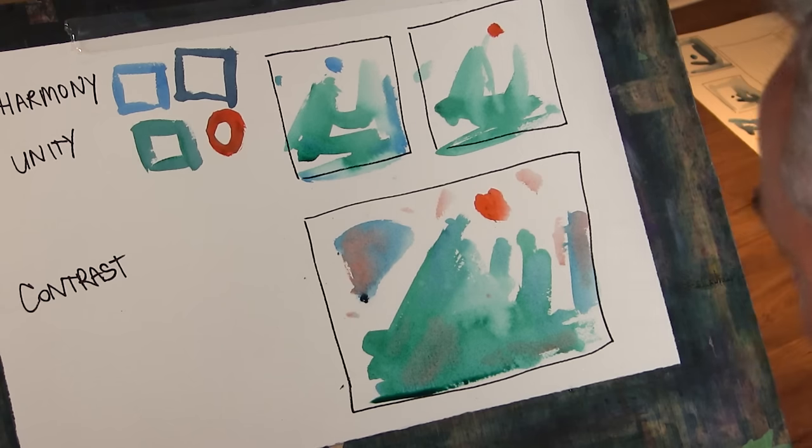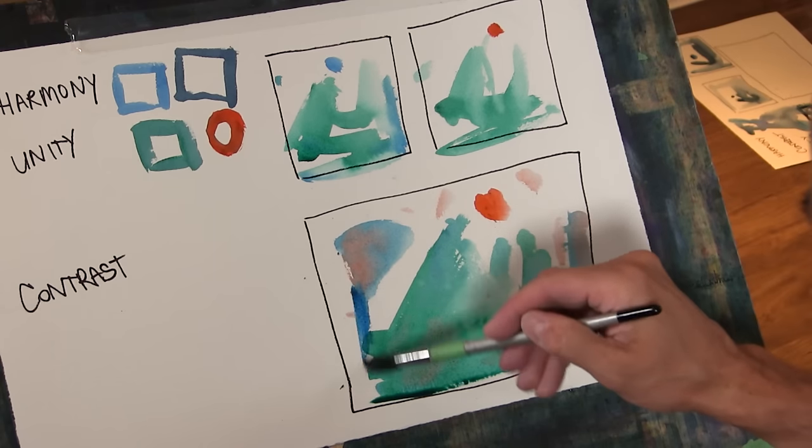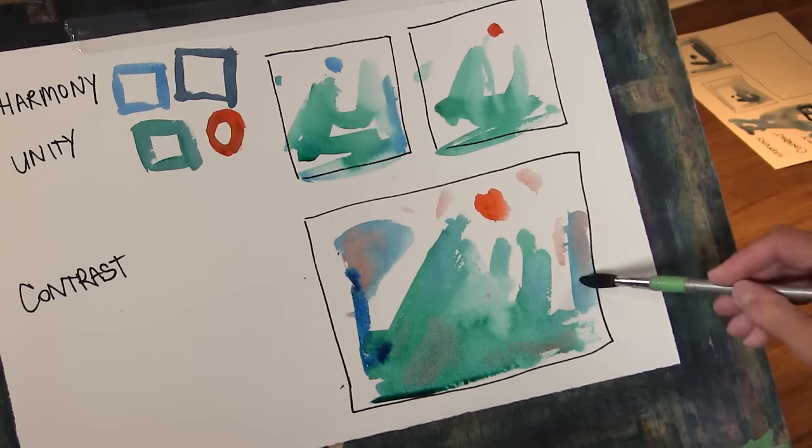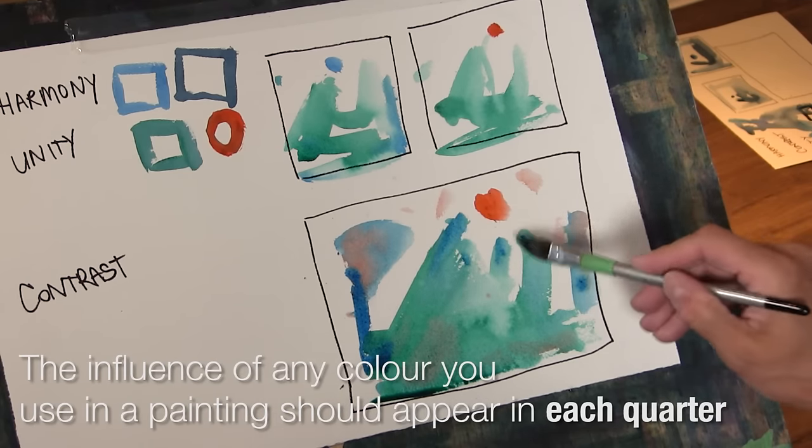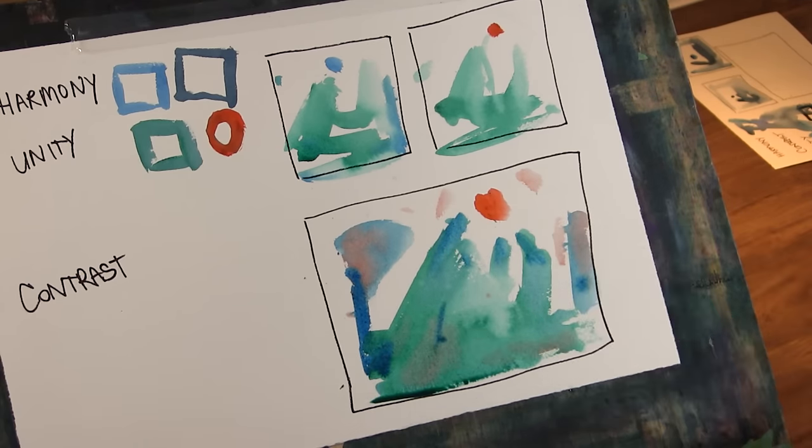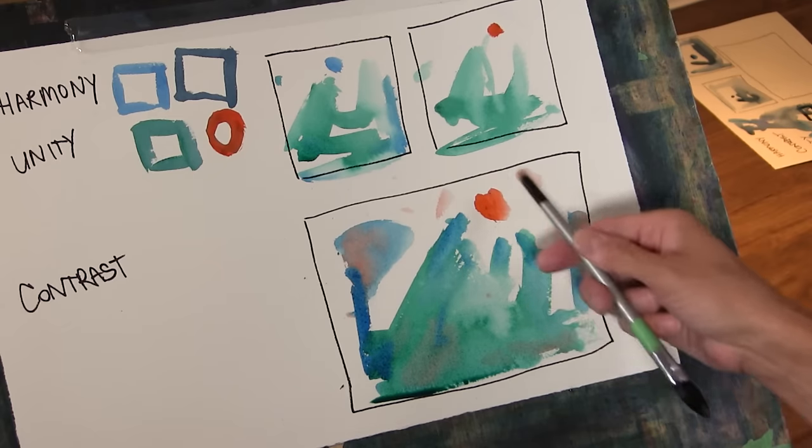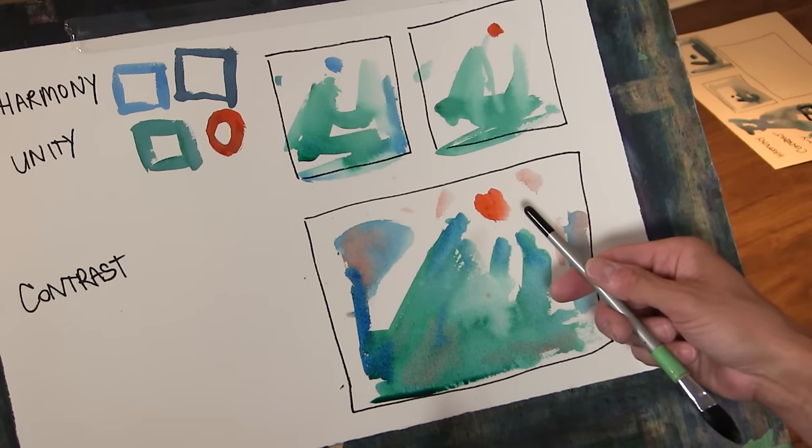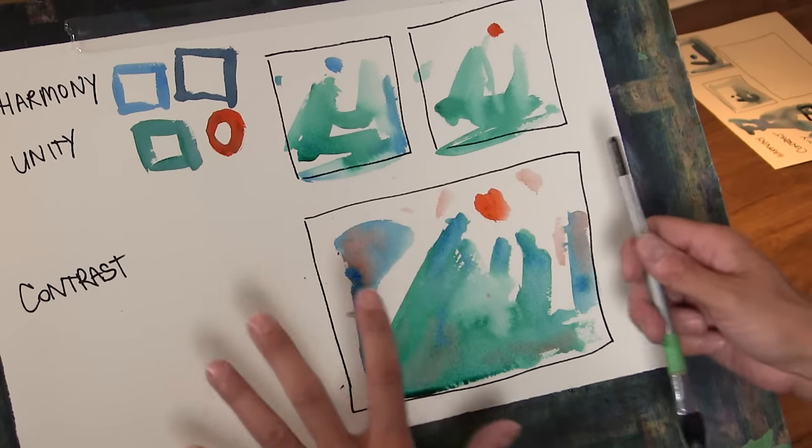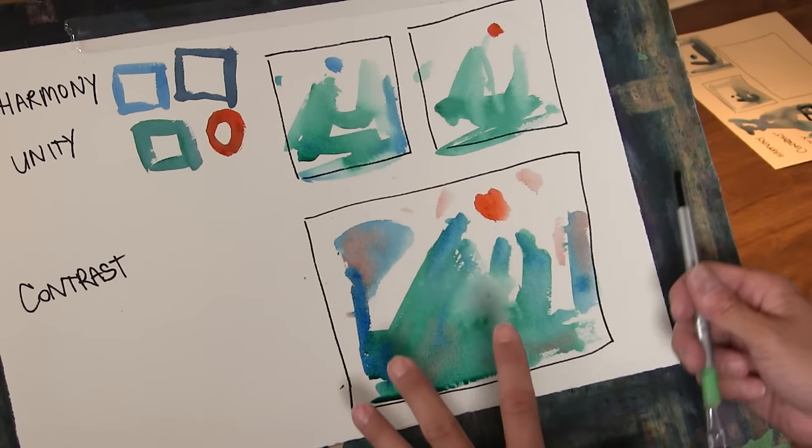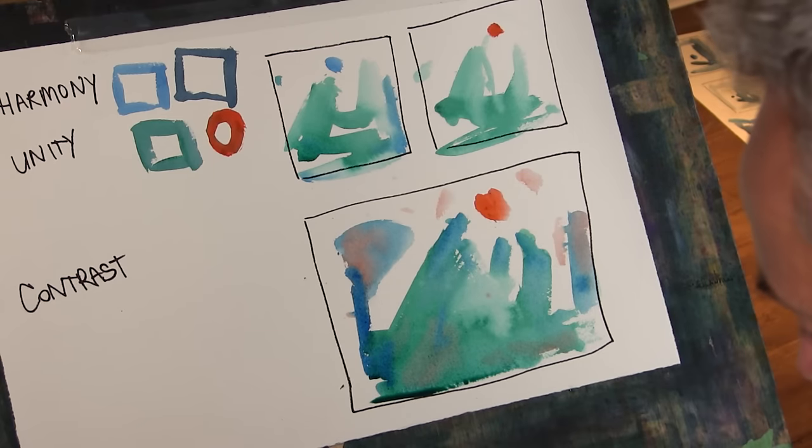Zoltan Szabo had a rule of thumb where he said any color that you use in a painting, its influence should appear somewhere in each quarter of the painting, and I find that's not a bad rule of thumb. So if you have a discordant color note that's shouting out a little too loudly, the way that you can knock it back is to introduce that color in other areas or to repeat it.